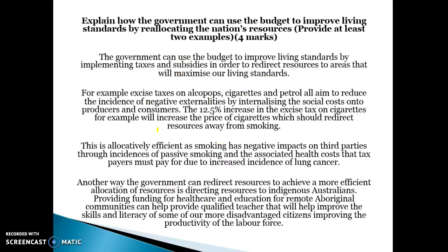This is what you need to talk about when looking at how we can use the budget to reallocate resources and improve our living standards. One example of using the budget to reallocate resources and improve living standards would be through the implementation of taxes and subsidies. An excise tax on tobacco, cigarettes, or petrol aims to reduce the incidence of negative externalities by internalising the social costs onto producers and consumers.